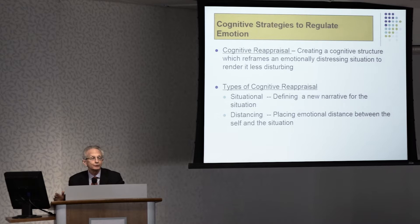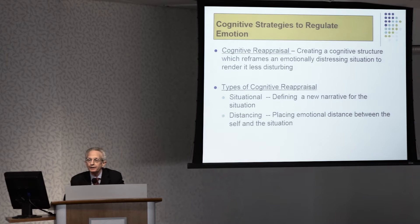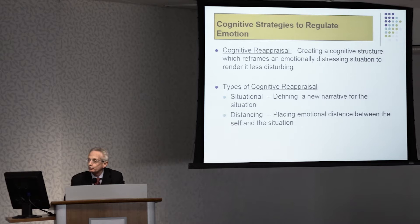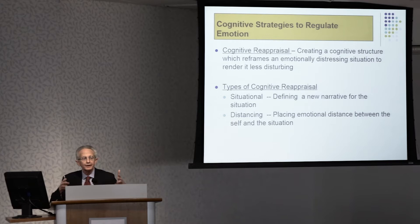Among the cognitive processes that are used, a number have been identified by Gross at Stanford and Kevin Ochsner at Columbia. One of the processes that's particularly adaptive and used by most people to regulate their emotions is cognitive reappraisal — creating a cognitive structure to reframe a disturbing situation to make it less disturbing.